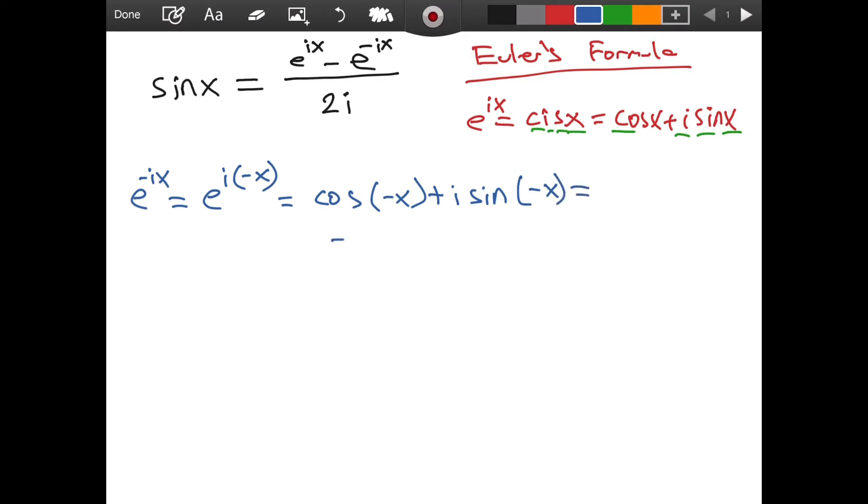And this is equal to, well, let's simplify these angles. We don't want the negative x, we want them in terms of x. We can use sum and difference formulas for sine and cosine, but we don't need to. I will just draw a unit circle. Now, if we have this angle as x, then this angle is going to be negative x.